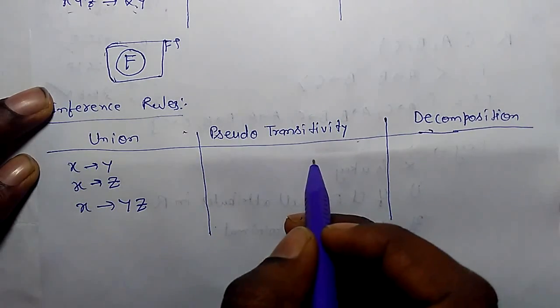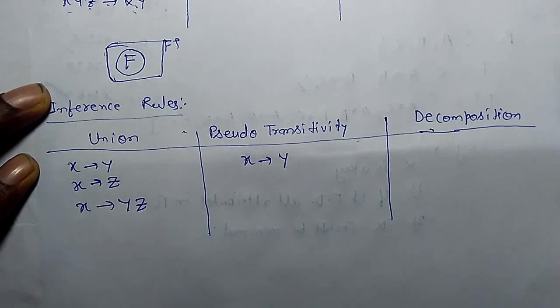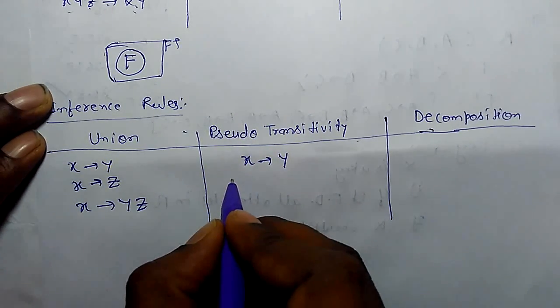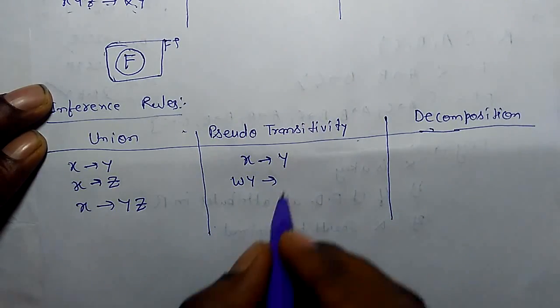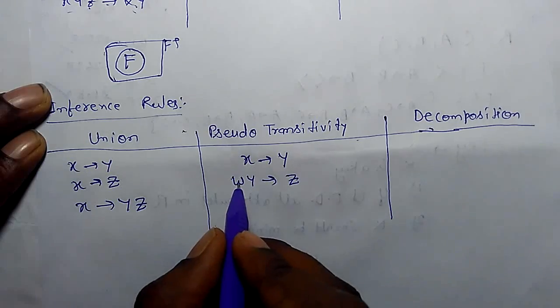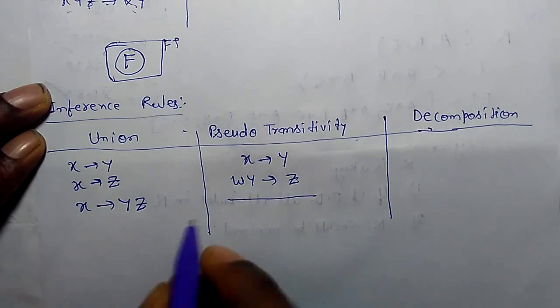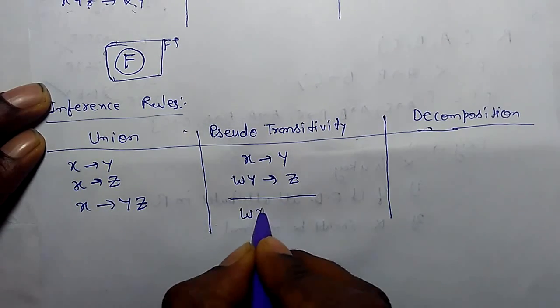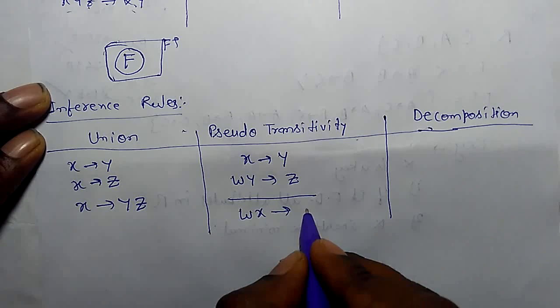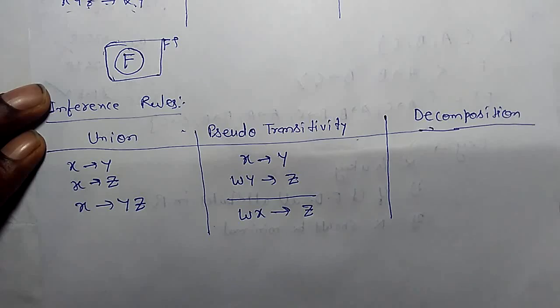In pseudo transitivity, if x functionally determines y and there is another rule where w, y functionally determines z, where w is also part of that relational database, we can say from these two rules w, x also functionally determines z. This is the pseudo transitivity rule.